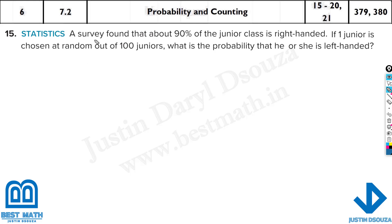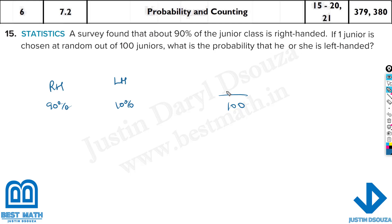The first question is about statistics. A survey found that 90% of the junior class is right-handed. So what is left-handed? 10% — you can tell directly. If one junior is chosen at random out of 100, total is 100, one person is selected. What is the probability that he or she is left-handed? Left-handed is 10%, so out of 100 there are 10, meaning it's 1 out of 10, or 10%.